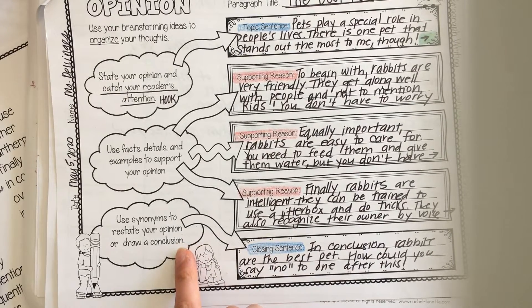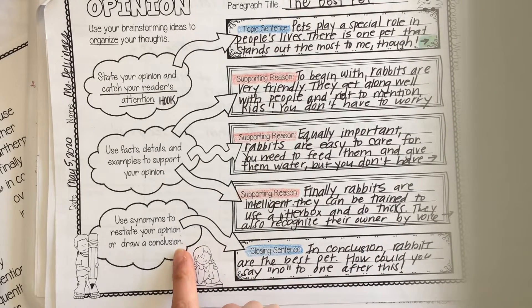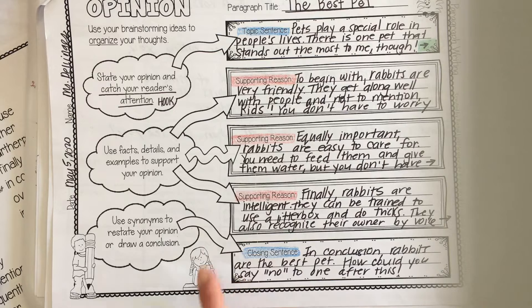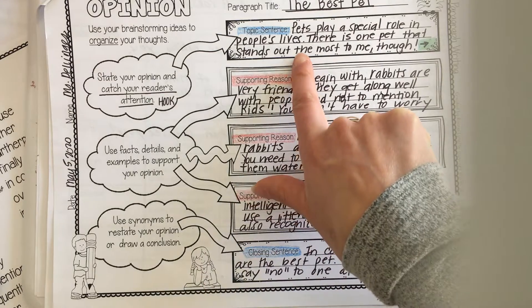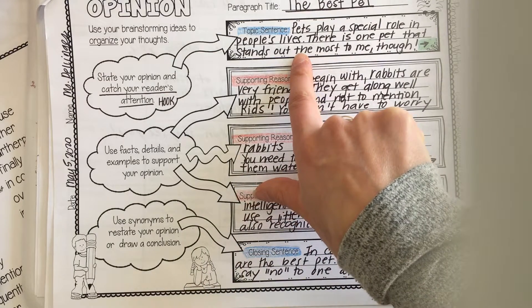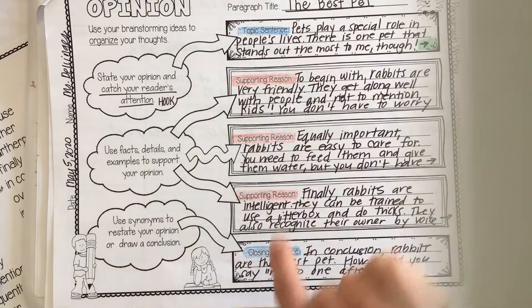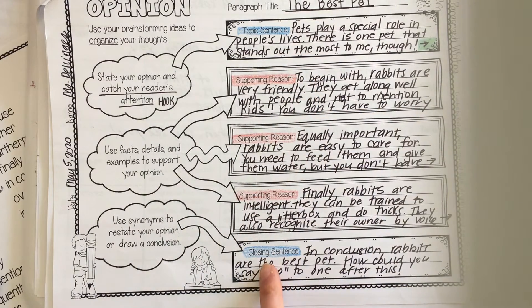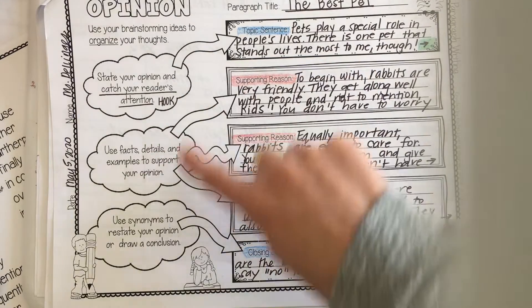At the end, my closing sentence or conclusion is going to restate my opinion or draw a conclusion. I don't want to say the exact same sentence I used in my topic sentence — I am restating it, but I want to use some different words.